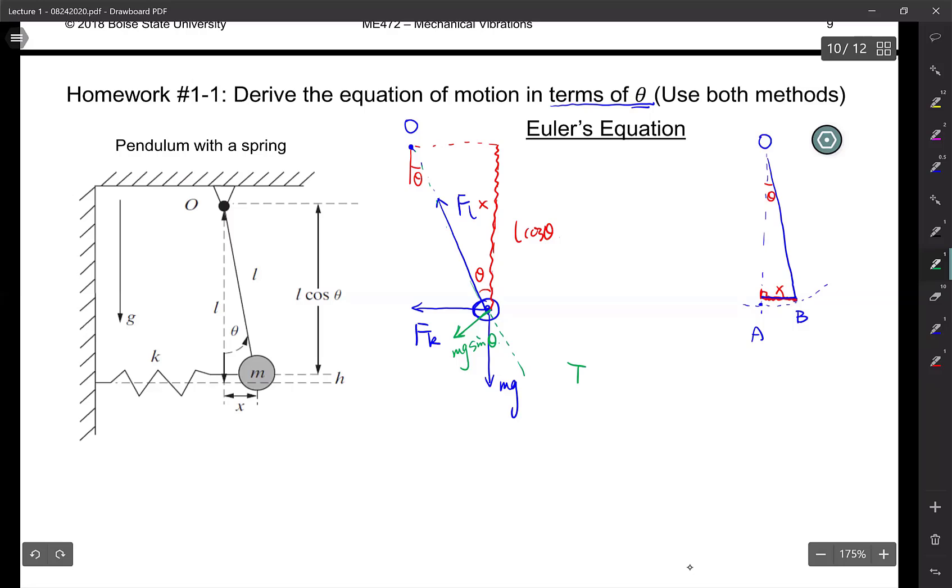So the torque T, associated with gravity, is going to be sine theta mg times L. As we discussed before, because this force is going to push everything back to the equilibrium position, that creates a clockwise rotation, so it's negative.